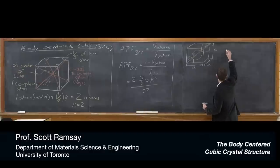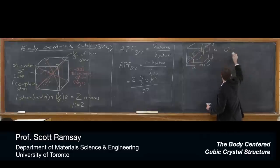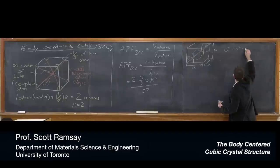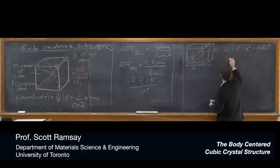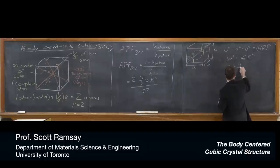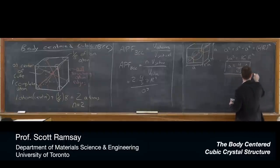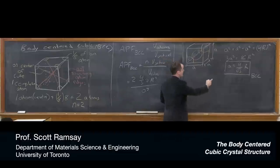So if we take Pythagoras in three dimensions, we've got a² + a² + a² equals the cube diagonal squared, which is (4r)². So 3a² equals 16r², or a equals 4 over root 3 times r. That's the relationship between a and r for BCC.